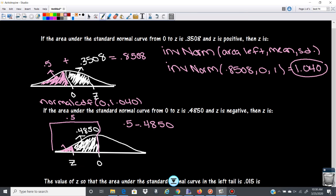Okay, so 0.5 minus 0.4850 gives us 0.015. Okay, so this missing area here is 0.015. Well, that's our area to the left of our z. So we're going to go inverse norm, 0.015, 0, 1, and that will give us our z-score.